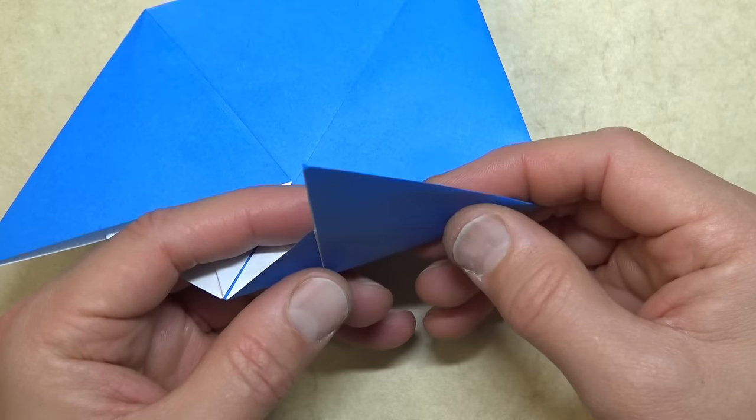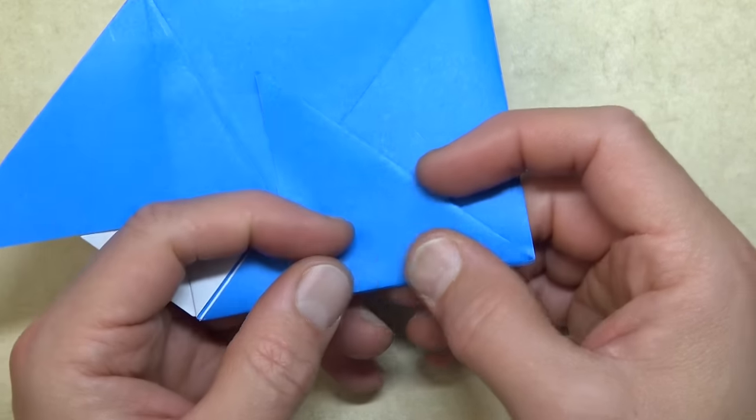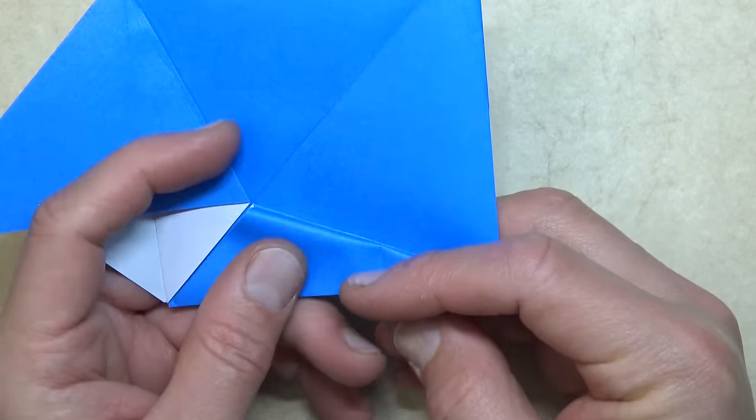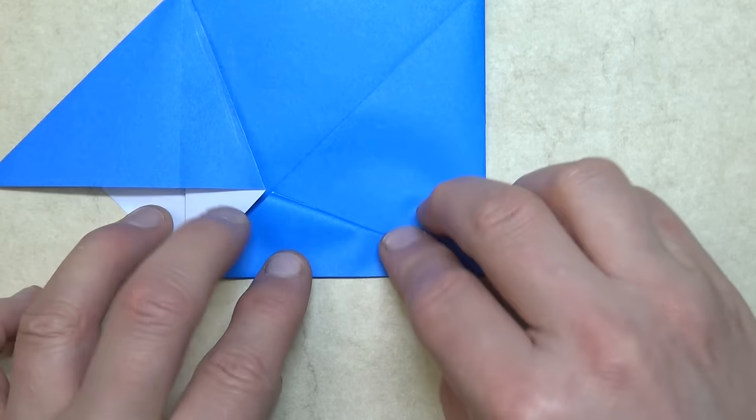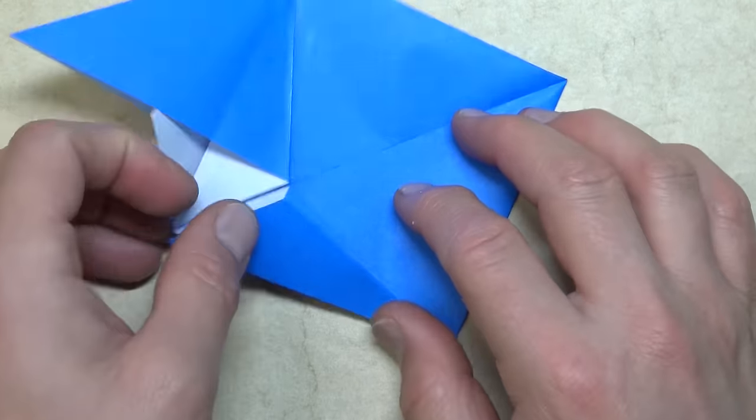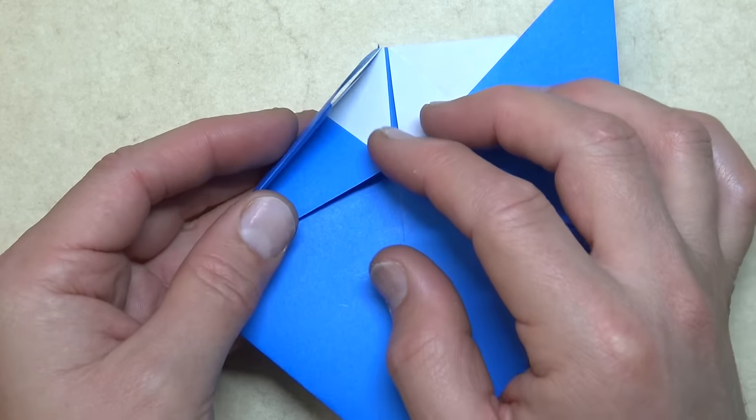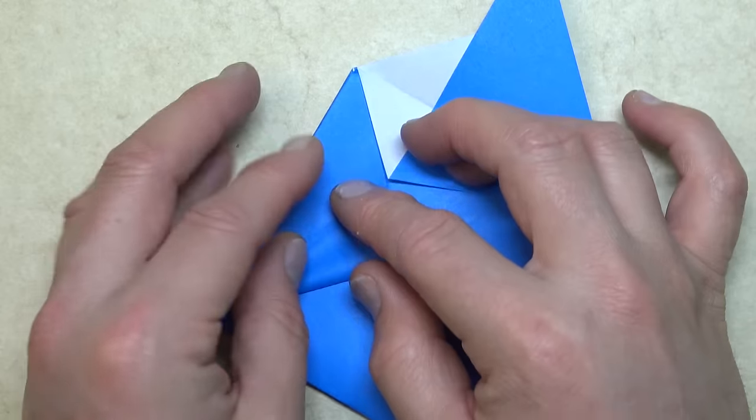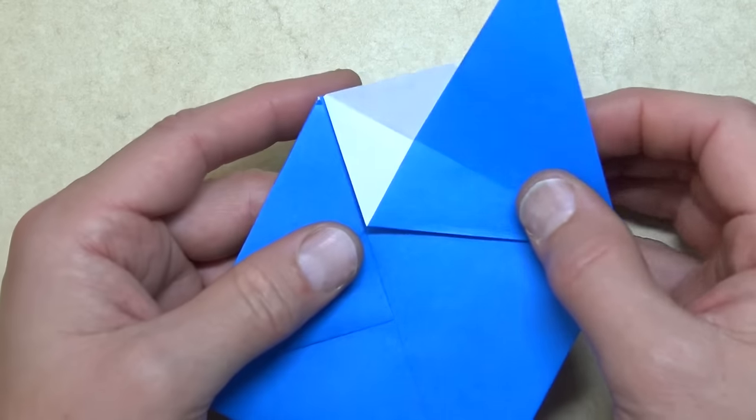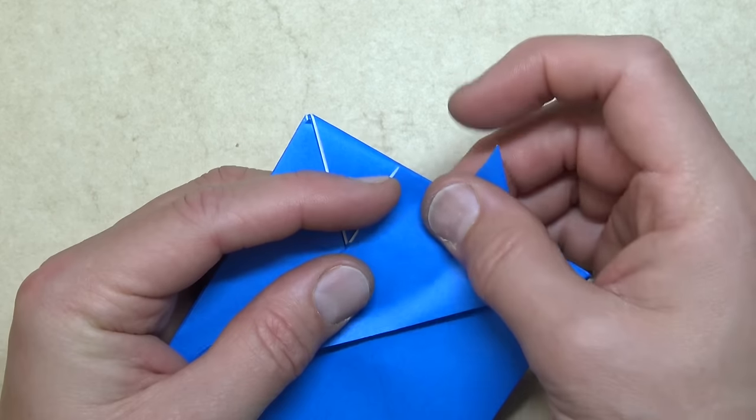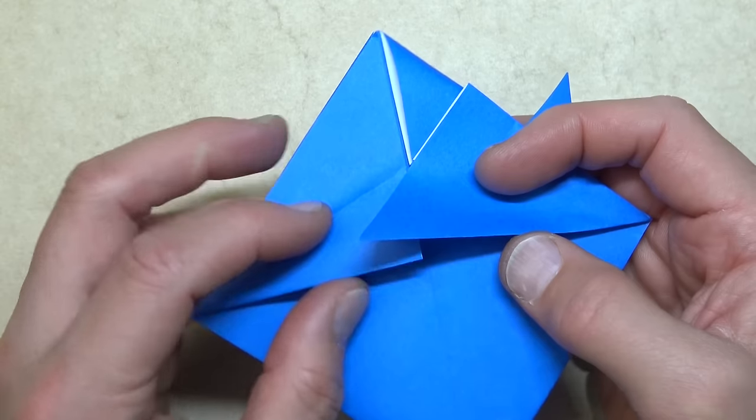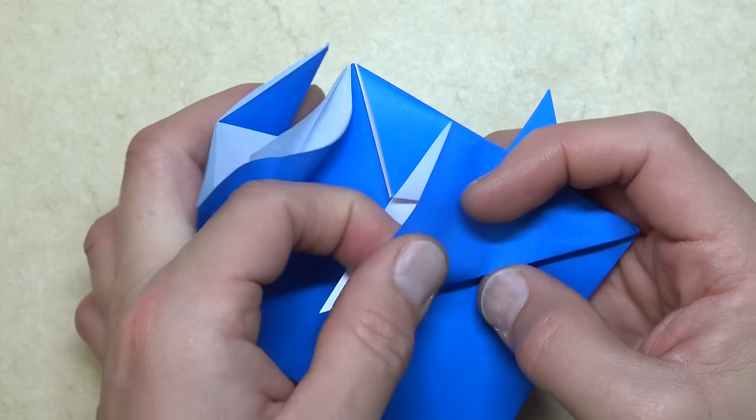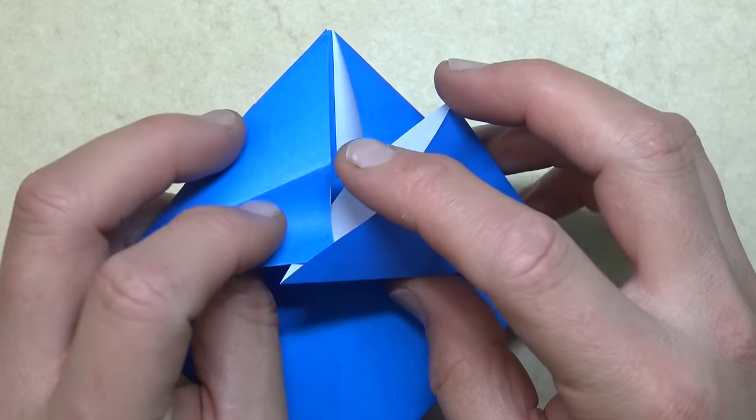Okay. Now fold this flap like this. And fold this flap so that this edge aligns with this edge. Rotate. Open here and pull out this flap. And flatten. And insert this flap into this pocket. Like that.